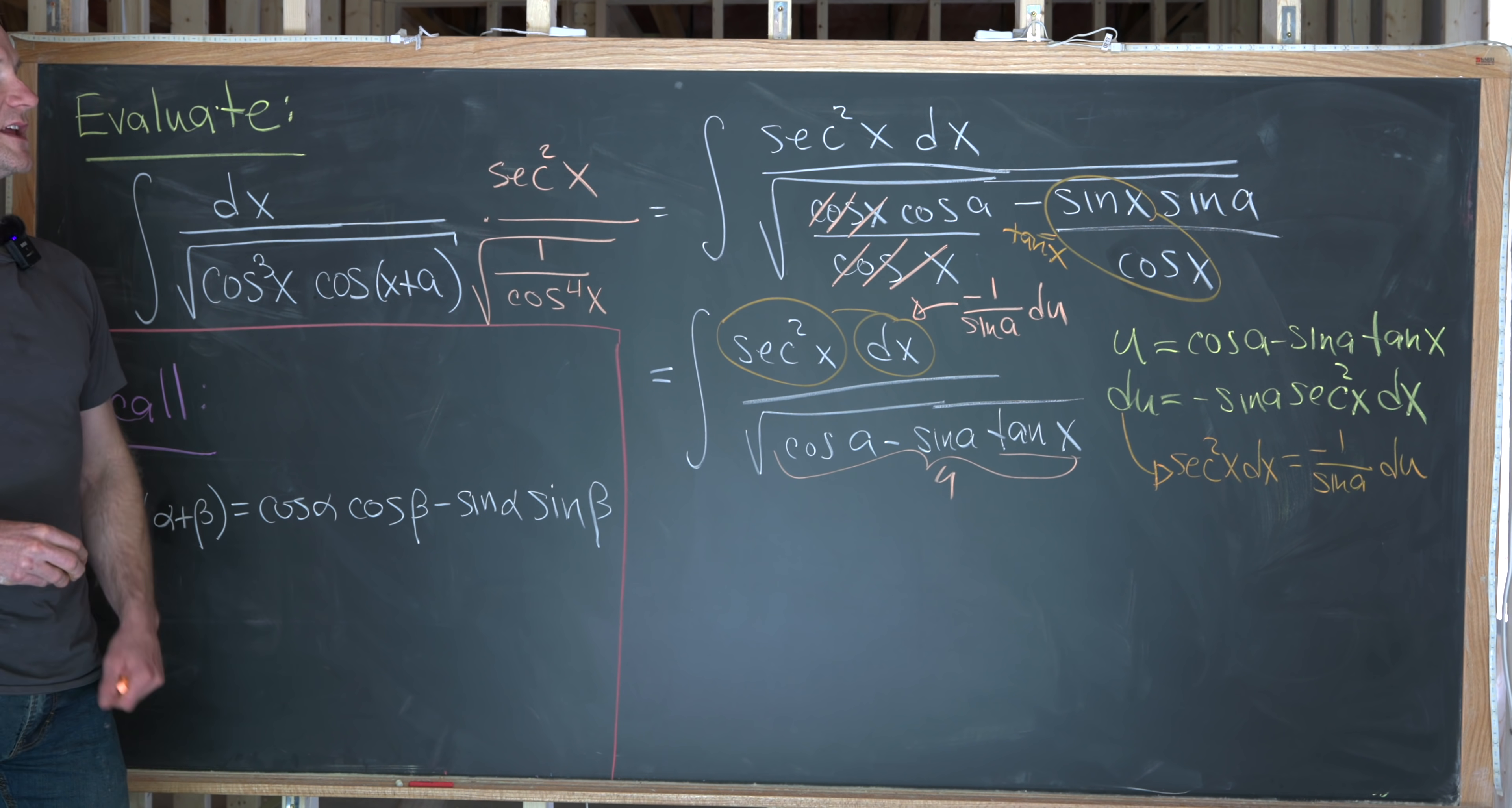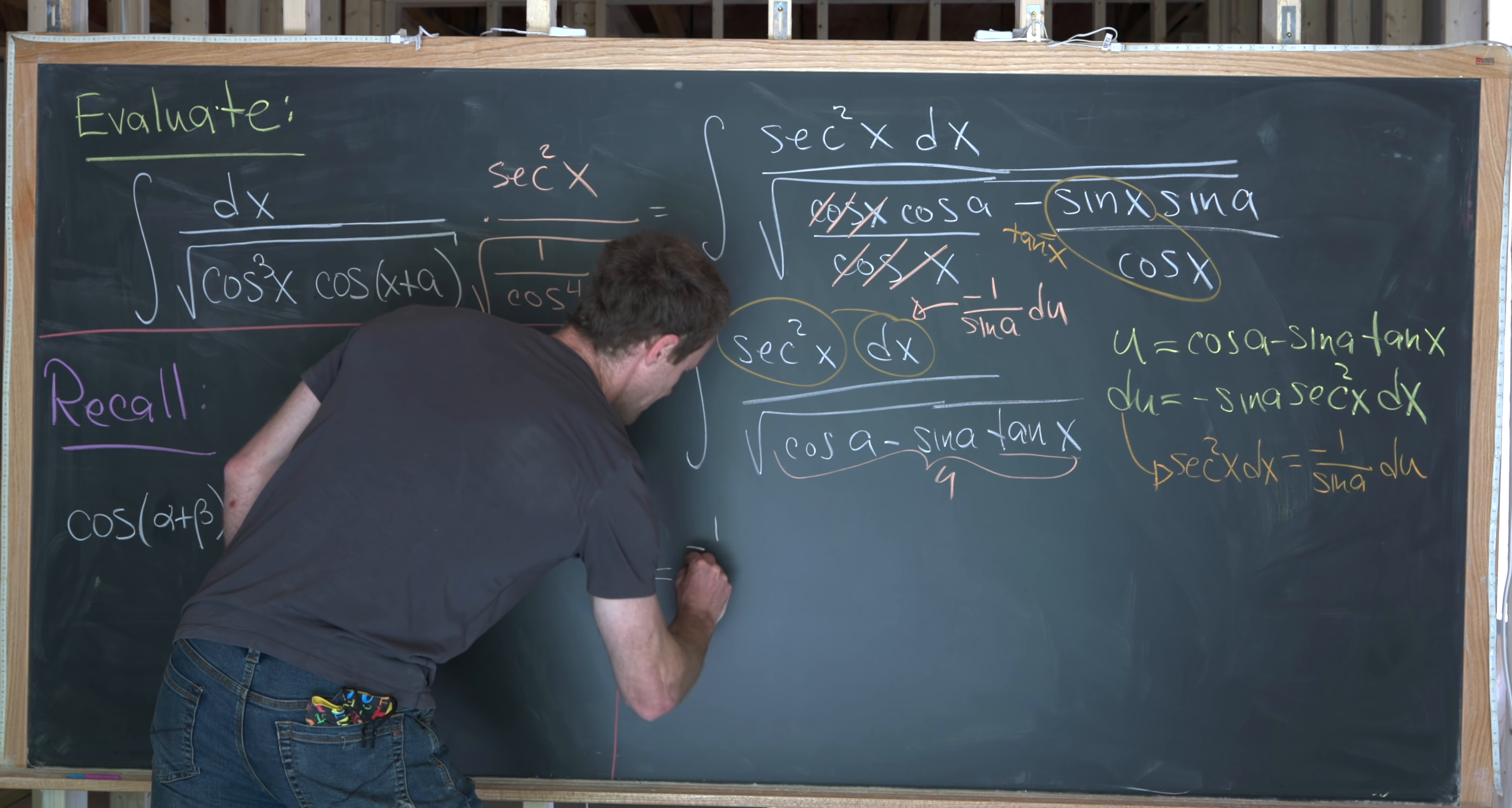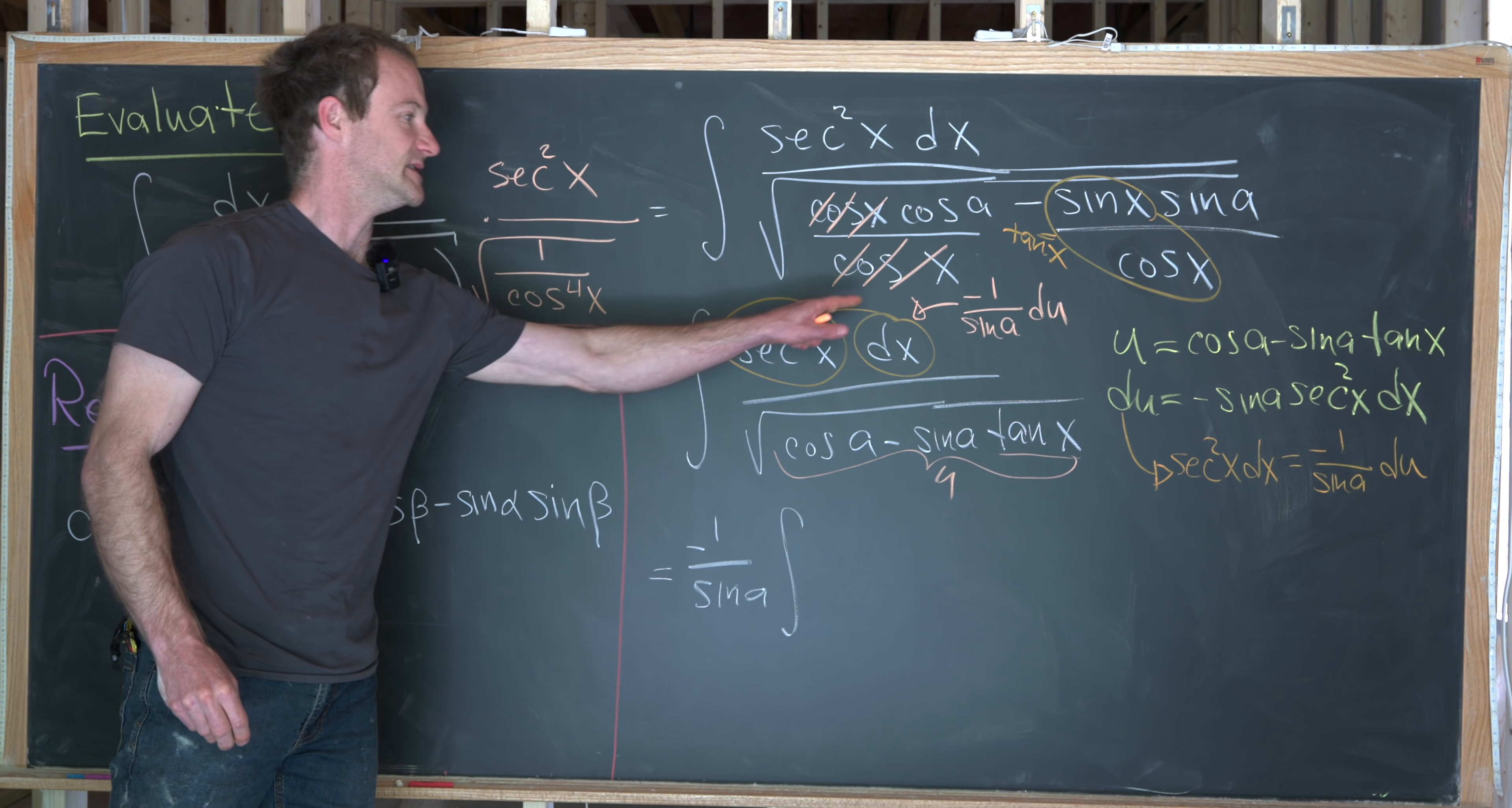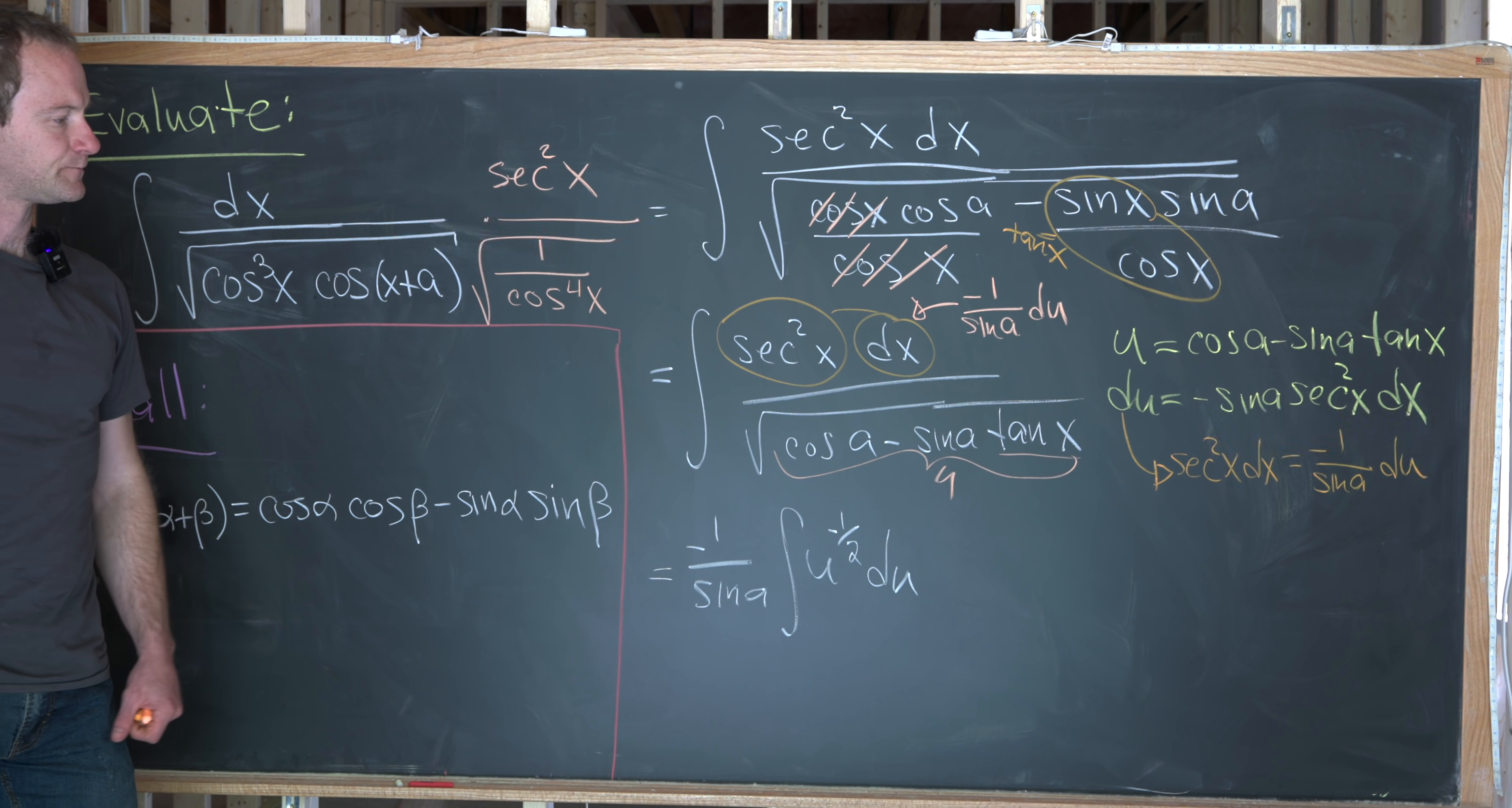So now let's rewrite it using that substitution. This minus one over sine a can just be brought outside. We have minus one over sine a and then the antiderivative of du over the square root of u. But I want to write that as u to the minus half so I can easily use the power rule. Recall that the power rule says that we increase the exponent by one and divide by the new exponent.